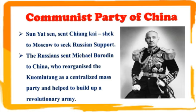Communist Party of China: With the revolution and the breakup of the old society, Confucian thought was generally sidelined. After the Russian Revolution of 1917, Sun Yat-sen sent Chiang Kai-shek to Moscow to seek Russian support. The Russians sent Michael Borodin to China, who reorganized the Kuomintang as a centralized mass party and helped to build up a revolutionary army.